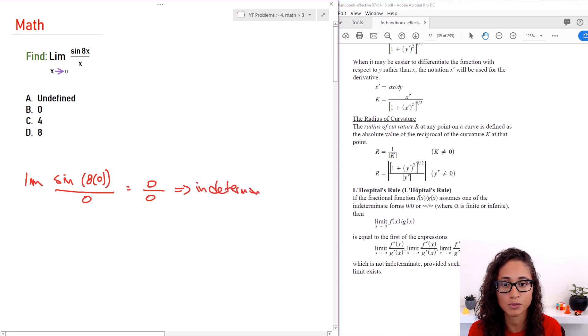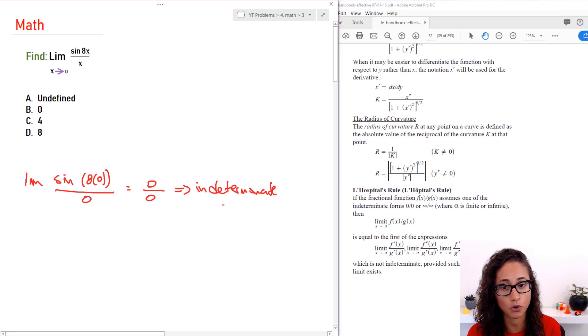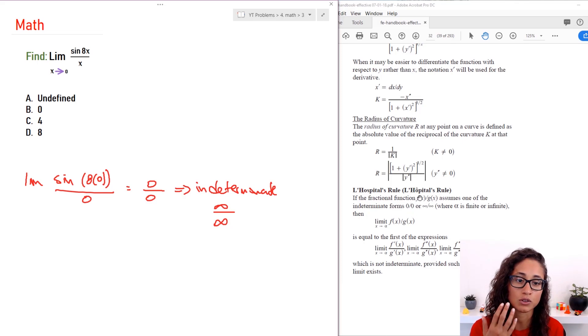And so when you have an indeterminate case, what we use is L'Hôpital's rule. When do we have indeterminate cases? It's when we have 0 over 0 or infinity over infinity. Infinity plus infinity is also considered as an indeterminate form. So when we have indeterminate form we have to use L'Hôpital's rule.